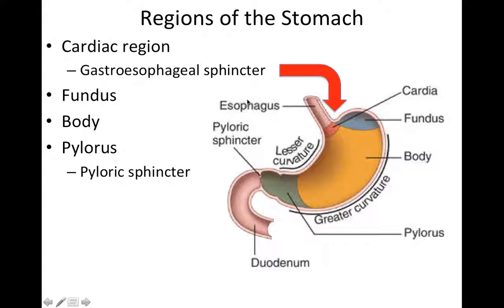The regions of the stomach include the cardiac region, what's called the fundus, the body, and the pylorus.